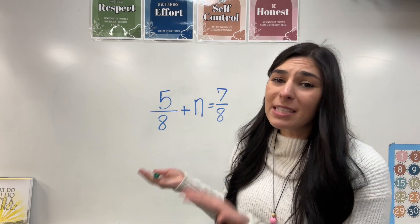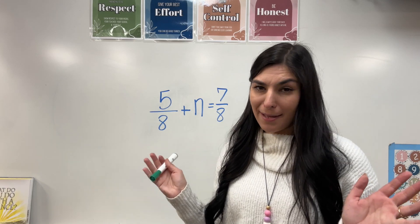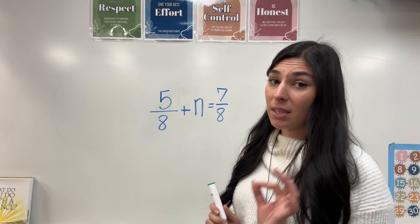Let's do a more complicated one. Now I said more complicated, we're doing the exact same thing. The numbers just look a little more intense. So I have five eighths plus n equals seven eighths. Again, I want to get the variable by itself. So step one, what is the operation asking us?